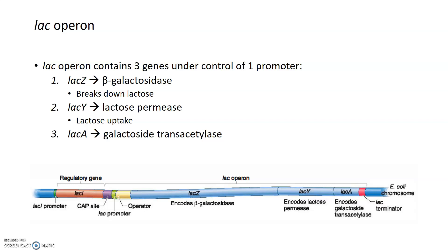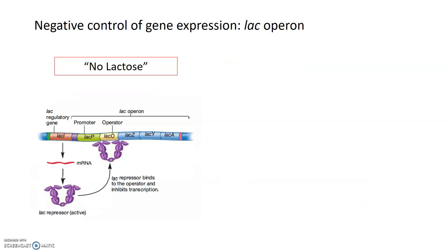In order to break down lactose in the environment, the lac operon would need to be in operation to make these different genes. But if you don't have lactose in the environment, there's really no point in making a lactose-breaking-down enzyme or another enzyme that brings lactose into the cell. So this operon is controlled by the presence and absence of lactose by a particular repressor called the lac repressor. When there's no lactose in the environment, the lac repressor binds to the operator of the lac operon, which you can see in yellow, and inhibits transcription of the lac Z, lac Y, and lac A genes.